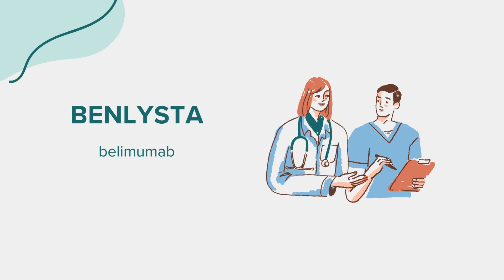Benlista se usa en combinación con otros medicamentos para tratar el lupus eritematoso sistémico, LES, activo y la nefritis lúpica, un tipo de inflamación renal relacionada con el lupus. Este medicamento está disponible en formas intravenosas y subcutáneas y está aprobado para adultos con LES y nefritis lúpica. La forma intravenosa también está aprobada para niños de 5 años en adelante con estas condiciones.